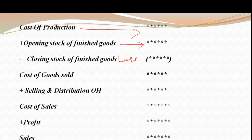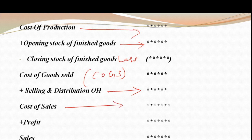Cost of Production में opening stock of finished goods add करेंगे और closing stock of finished goods less करेंगे — इससे COGS (Cost of Goods Sold) मिलेगा। अगर selling and distribution overheads add करें तो Cost of Sales मिलेगा। और अगर profit add करें तो finally Sales का answer मिलेगा। Unless you are comfortable with the cost sheet format, you cannot solve reconciliation statement।